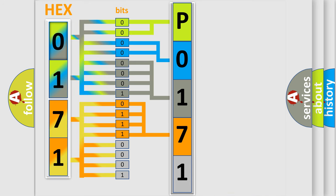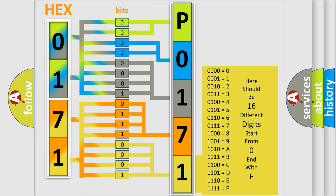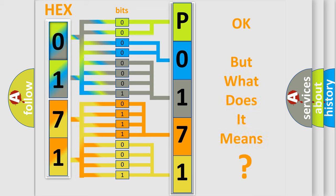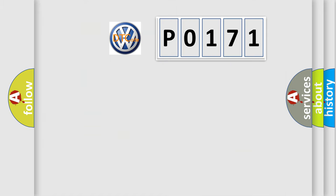A single byte conceals 256 possible combinations. We now know in what way the diagnostic tool translates the received information into a more comprehensible format. The number itself does not make sense to us if we cannot assign information about what it actually expresses. So, what does the diagnostic trouble code P0171 interpret specifically for Volkswagen car manufacturers?